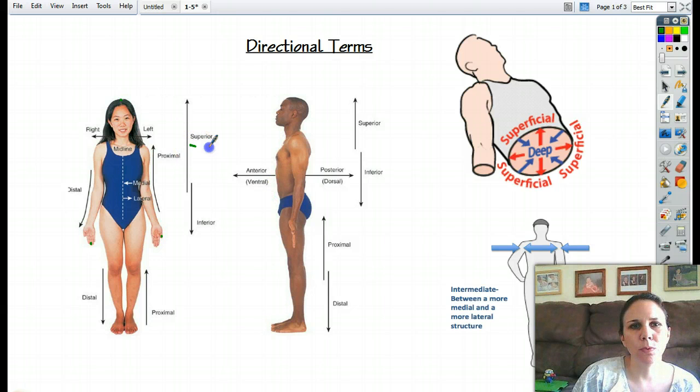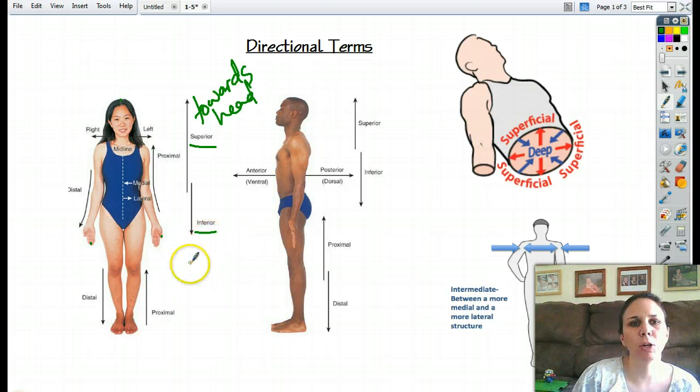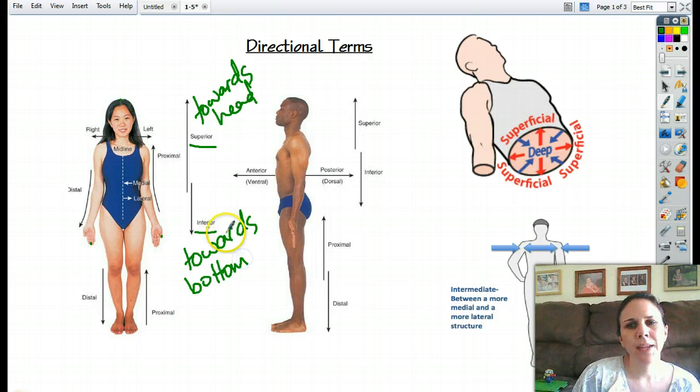Okay, now the next two, we have superior versus inferior. Superior means towards the head. Inferior means towards the bottom. Now because of the way that we stand, our bottom is our feet. But if you're a cat,